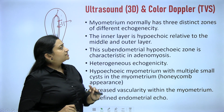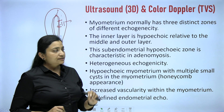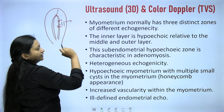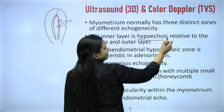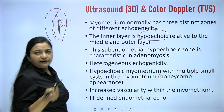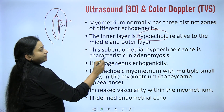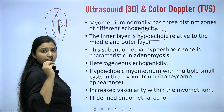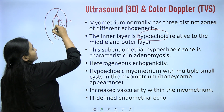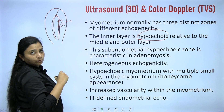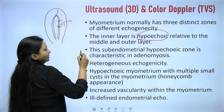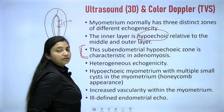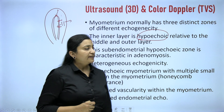The myometrium normally has three distinct zones of different echogenicity. The inner subendometrial layer is hypoechoic relative to the middle and outer layers. This subendometrial hypoechoic zone is characteristic in adenomyosis, which shows haze — it is not uniformly hypoechoic throughout. This is very pathognomonic of adenomyosis on sonography.